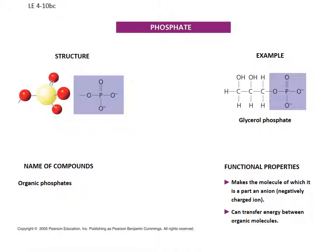The last group, and a really super important one, is the phosphate group. As you can see, we have a phosphorus atom surrounded by a bunch of oxygens. Phosphates are extremely important because they play a role in the transfer of energy between organic molecules. We'll be talking about one in particular: ATP, adenosine triphosphate. The major role these groups play is in the transfer of energy. Notice all those negative charges on those oxygens — phosphates give a molecule an overall negative charge. DNA has tons of phosphates, and overall, DNA is negatively charged.